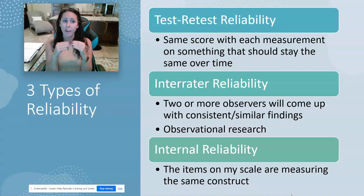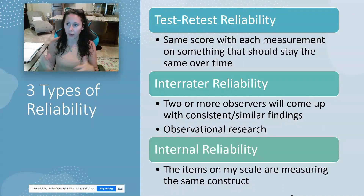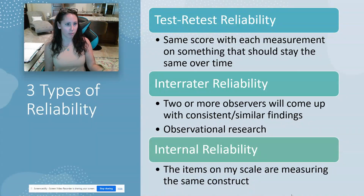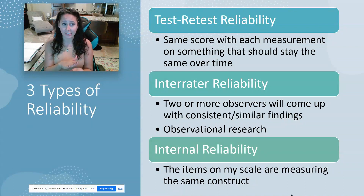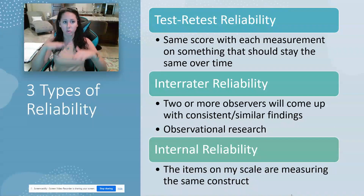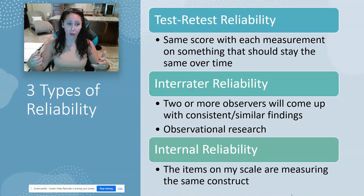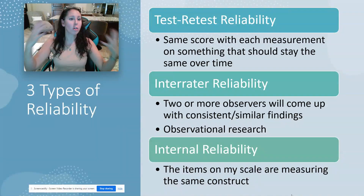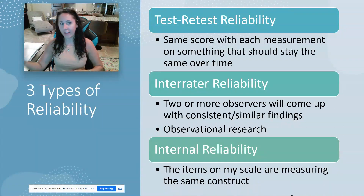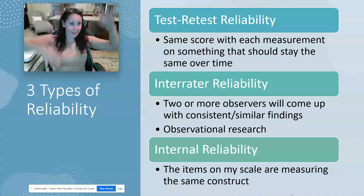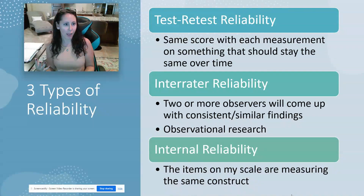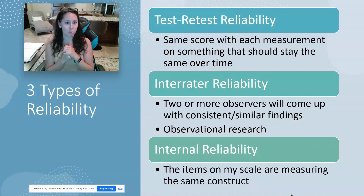I expect your scores on those two to be very highly correlated unless there was some major extenuating circumstance — like you were just coming out of a concussion the first time and weren't cognitively clear. The idea of test-retest reliability is if I'm expecting something to stay the same, I should see a similar score when I give you those measures. If you have totally different scores, there's something wrong with my inventory. For example, if I'm measuring overall life satisfaction and your numbers vary wildly from September to October with nothing major happening, I might need to question whether I'm really measuring overall life satisfaction or just current mood.